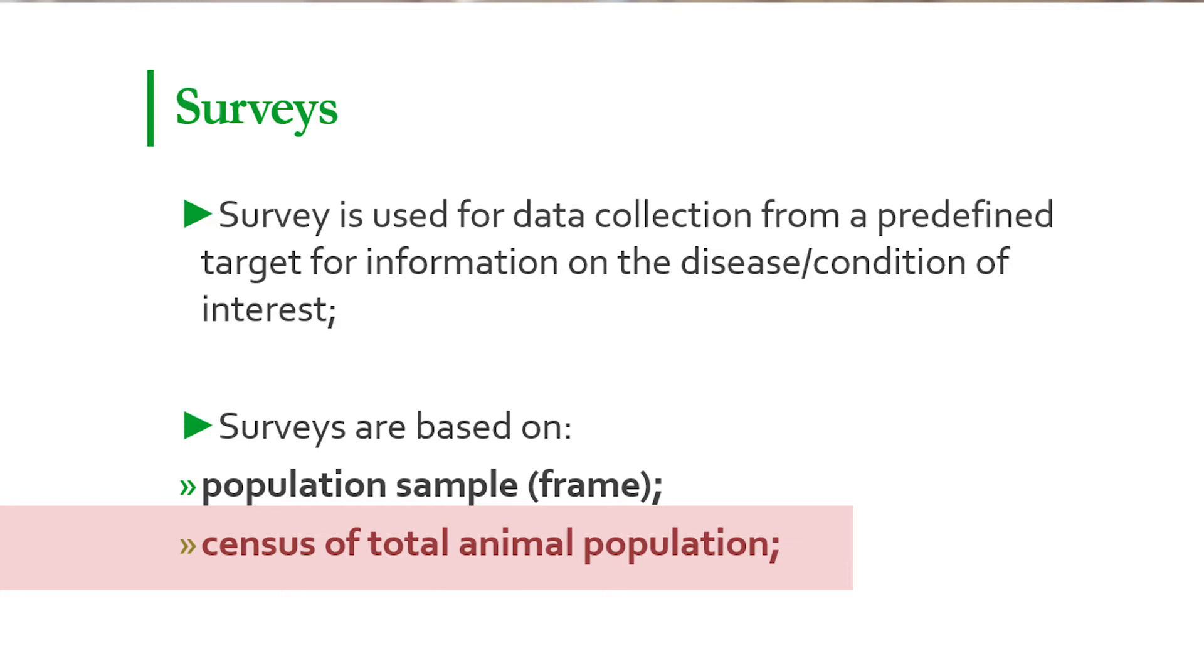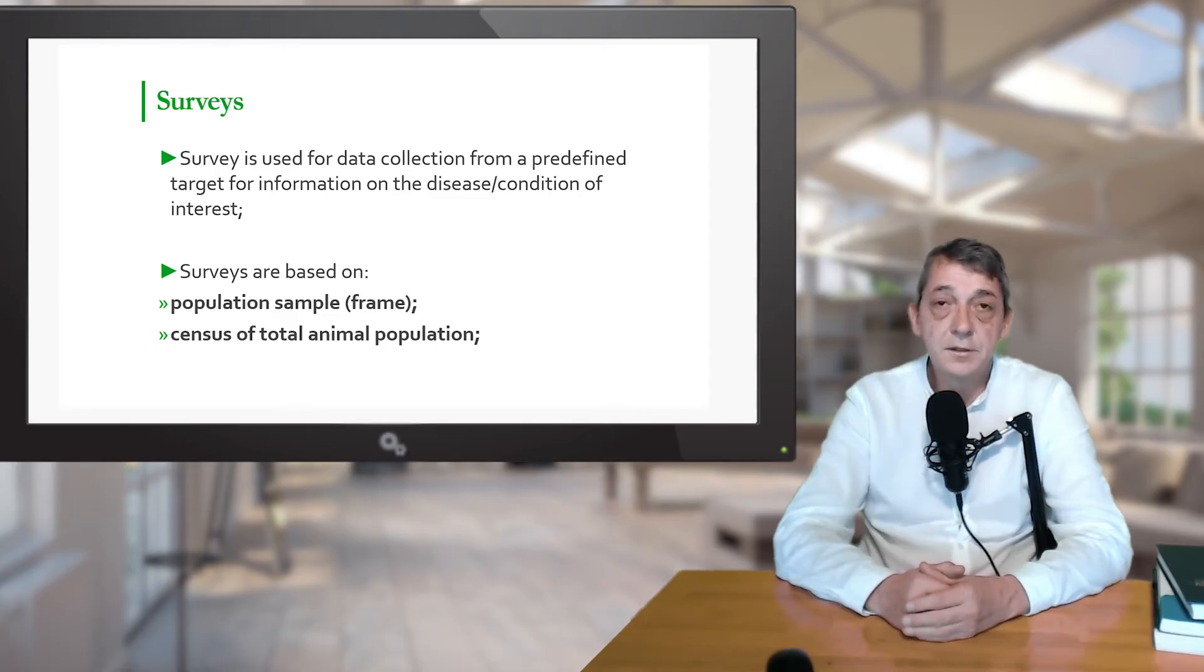Designing and implementing a census is quite labor and financially demanding. Therefore, censuses are usually combined with other activities if they exist in the country, and usually they are combined with routine checking for tuberculosis or blood collection for brucellosis. The other possibility is to carry out surveying of a sample of the population. In this case, the statistical validity of the sample and the precision required must be taken into consideration, which ultimately define the required sample size.